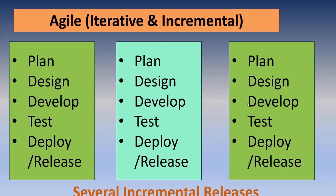Both the iterative model and the incremental model are applied here. After each and every iteration, you release a minimum shippable product — also called a potentially shippable increment. Each release can be used by customers, and learning from each iteration feeds into the next sprint.